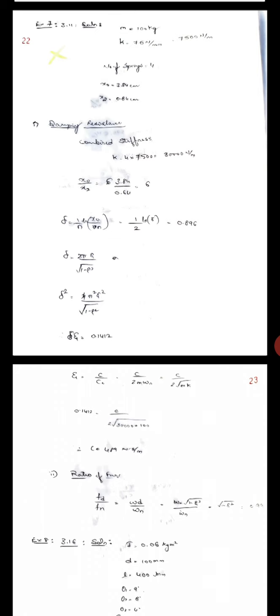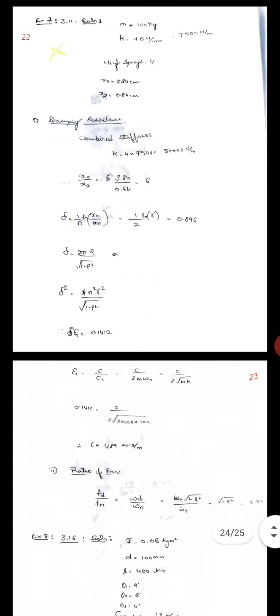Combined stiffness k is 4 into 7500, which equals 30000 Nm per meter. x0 by x2 equals 3.84 cm by 0.64 cm, which is 6.